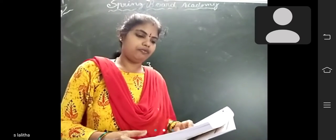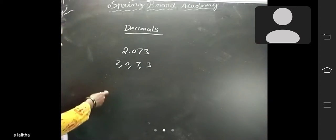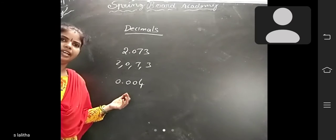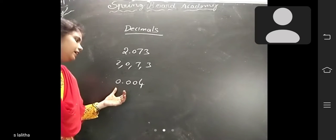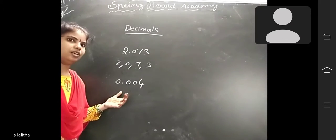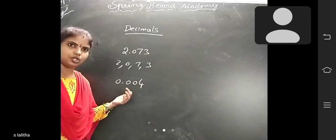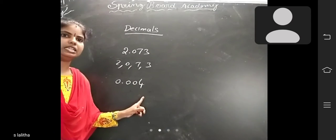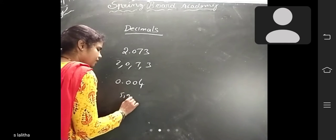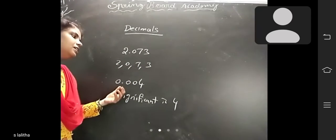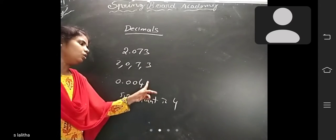Next rule: in a decimal number lying between 0 and 1, the initial zeros are not significant. For example, 0.004. This is less than 1, so you do not count the zeros on the left. How many significant figures are there? Only 1 — the digit 4. So there is only 1 significant figure.